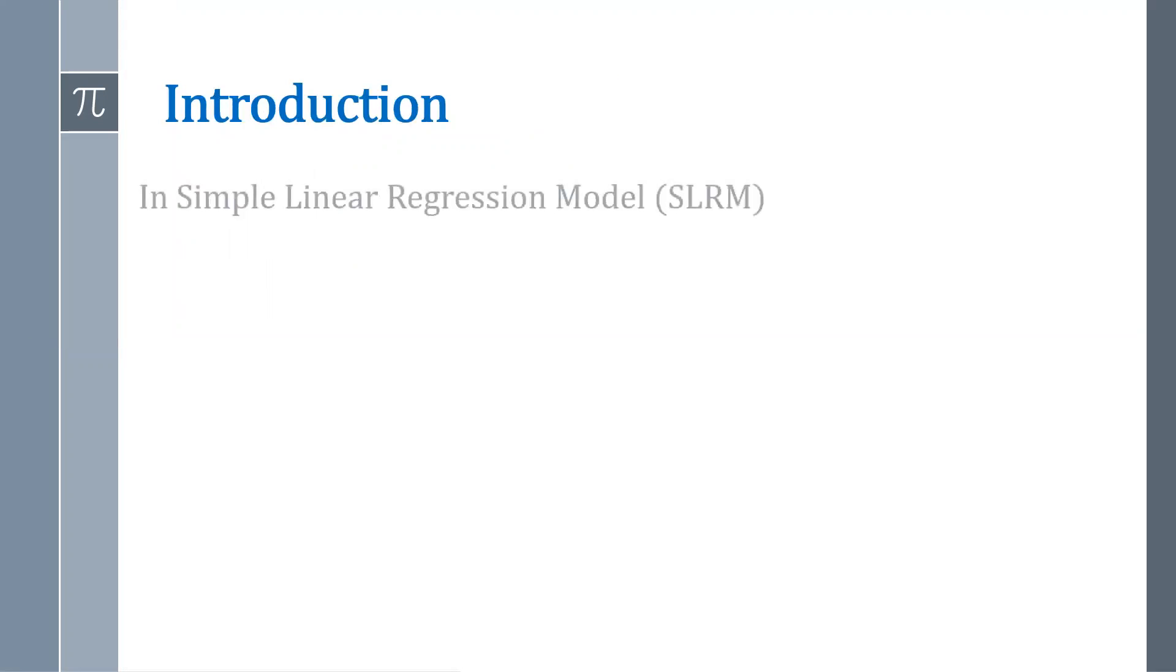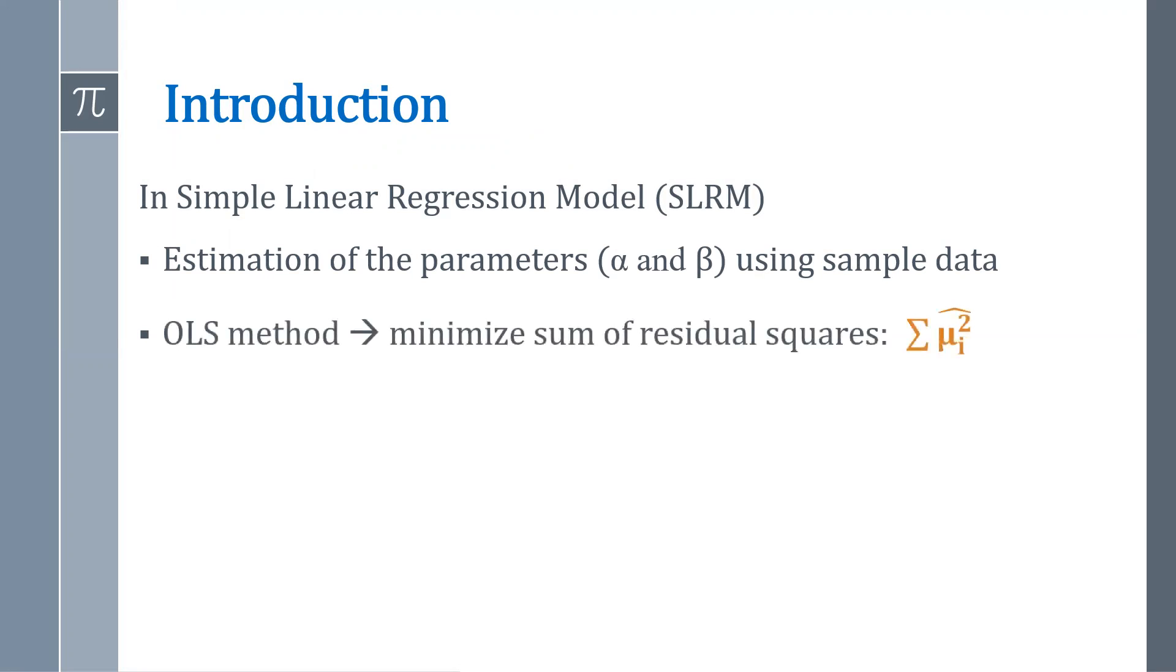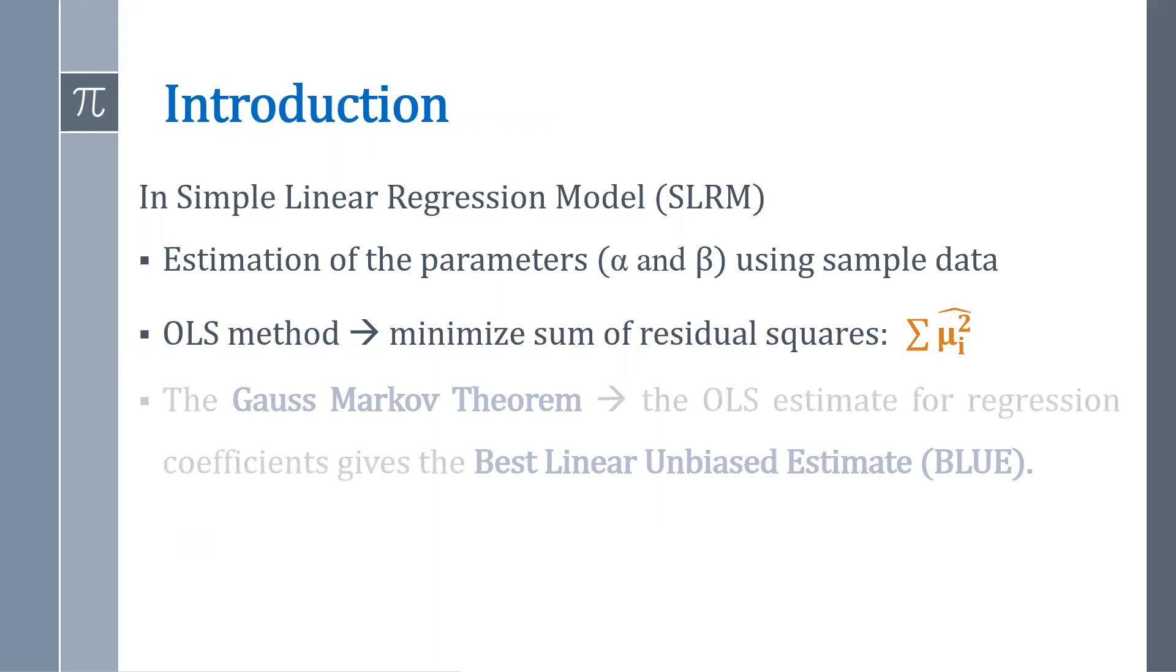Let's begin with the introduction. In simple linear regression model, we estimate the population parameters alpha and beta using sample data through OLS method. That means we are minimizing the sum of residual squares.